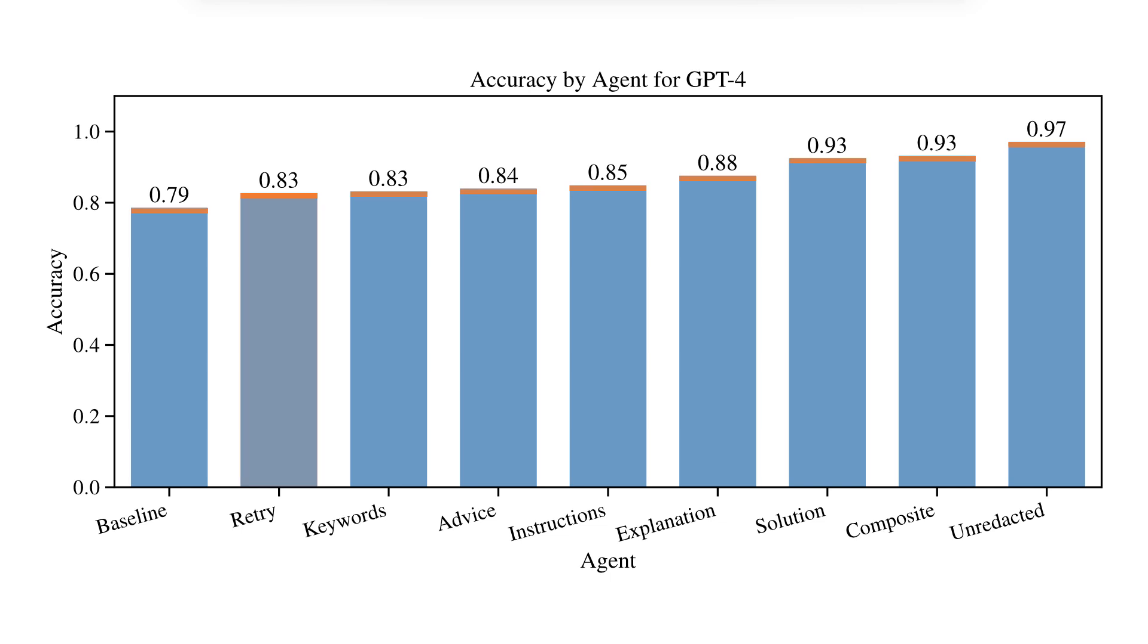Two more items of note. First, simply informing the LLM that it answered a question incorrectly, without providing any additional information, was sufficient for a statistically significant increase in performance. And we'll discuss that a bit more later.